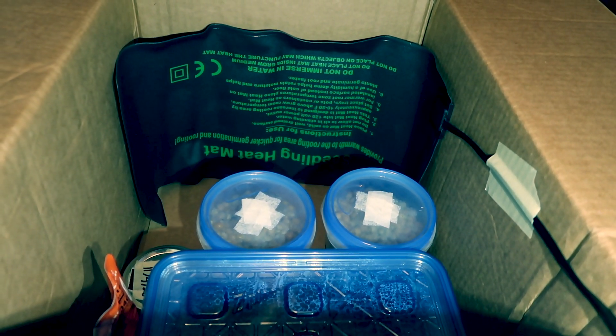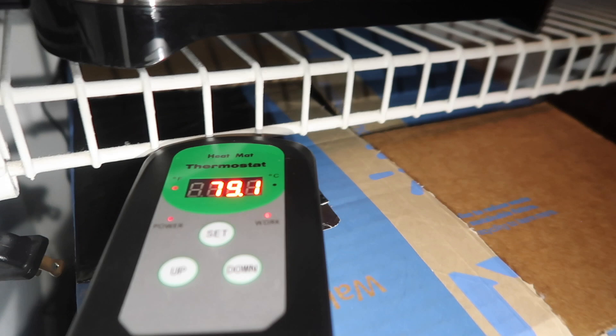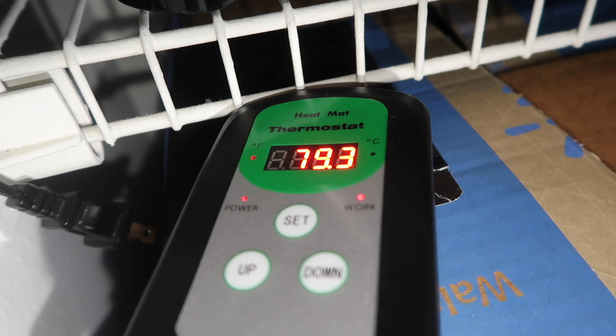Here's a look at the little incubation box we just built working. As you can see the work light is on so it's working to get up to that 80 degree temperature, and once it reaches that the work light will come off. And then once that ambient temperature falls below 80 degrees Fahrenheit it's going to kick back on and heat it up.